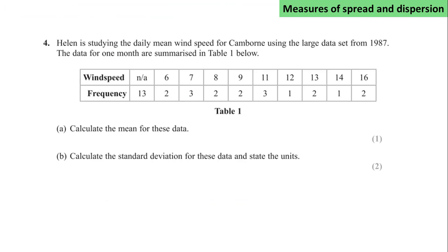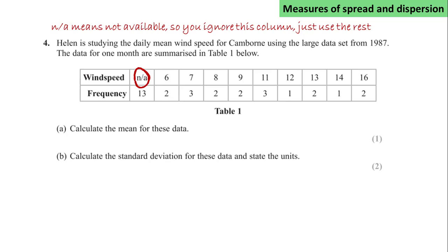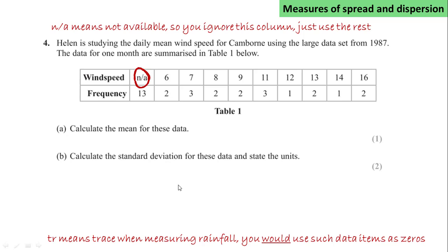Helen is studying the daily mean wind speed for Campbell using the large data set from 1987. The data for one month are summarised in a table showing wind speed and frequency. N/A means that on 13 days the wind speed was not available. You should also be aware of the TR coding in the large data set — this means trace when measuring rainfall, and you would set those data items to zero.